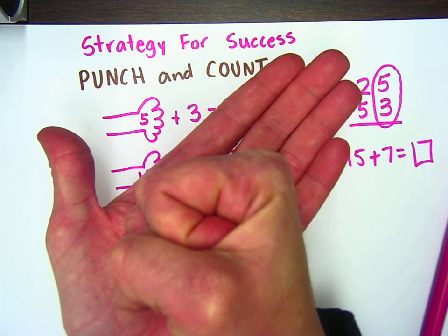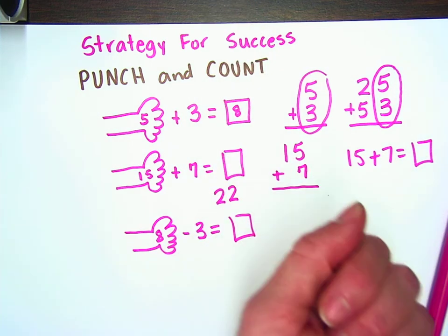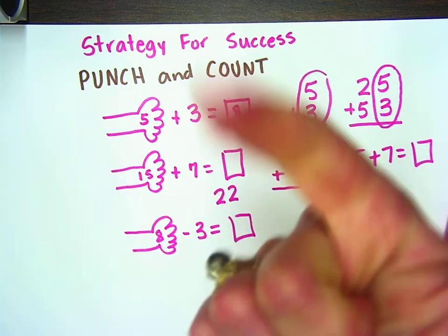And instead of counting forward, I would count backwards. But I would hold up the same number of fingers. One, two, and three. So, it would go like this. Eight, seven, six, five.